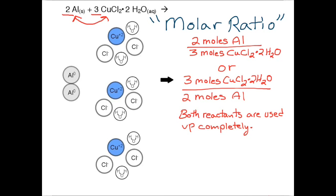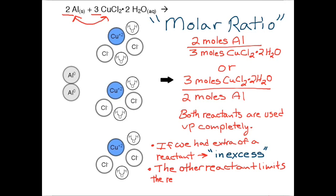On the other hand, if we had extra of one of the reactants, we would say that that reactant was in excess. So at the end of the reaction, there would be some left over. The other reactant, which will run out first and thereby stopping the reaction, will limit the reaction. So we call the other reactant the limiting reactant.